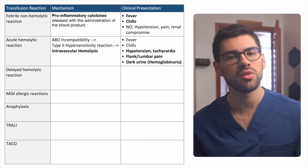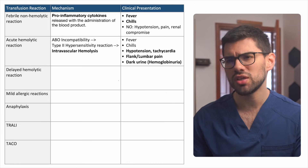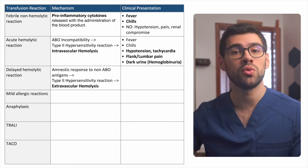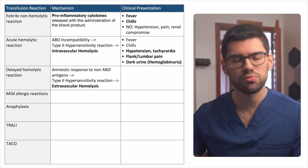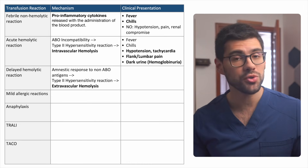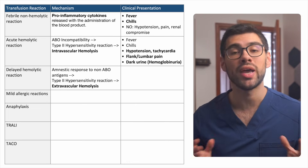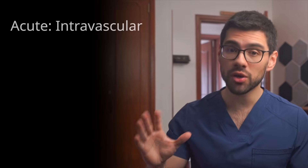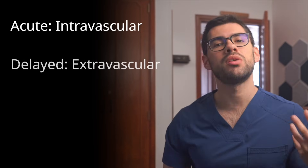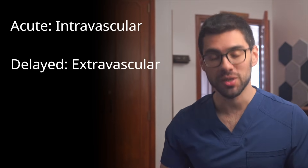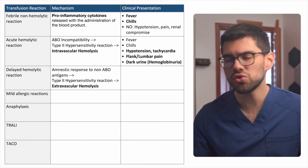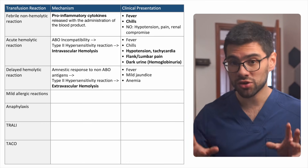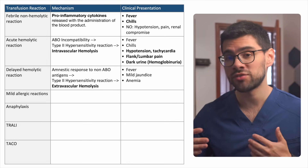Now let's move on to the delayed hemolytic reaction. Unlike the acute version, this one is actually not that concerning. It occurs in patients who were previously sensitized to non-ABO red blood cell antigens, usually through prior transfusions, pregnancy, or transplants. Upon re-exposure to these antigens, their immune system launches a response leading to extravascular hemolysis — keyword: extravascular. So acute hemolytic reaction causes intravascular hemolysis; delayed hemolytic reaction causes extravascular hemolysis. Signs and symptoms are more subtle and usually consist just of fever, mild jaundice, and maybe anemia, and importantly they occur days to weeks after the transfusion was given.